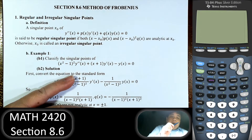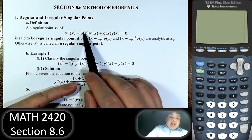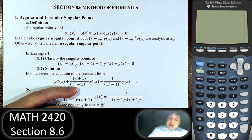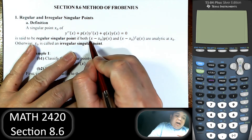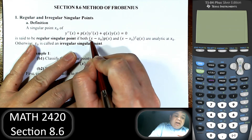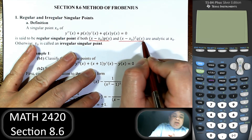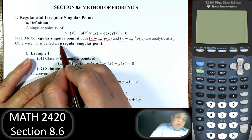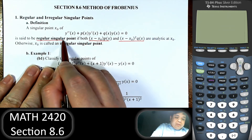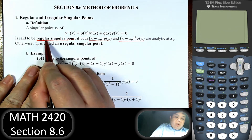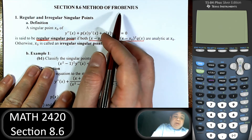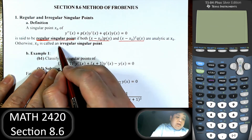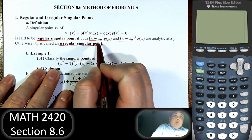In this section, we handle the special case when p of x and q of x is undefined — meaning they are not analytic. But if we have the case where we multiply (x minus x-naught) times p of x, and (x minus x-naught) squared times q of x, and if those are analytic at x-naught, then we call those points regular singular points. And if it is a regular singular point, we can use the method of Frobenius to write the power series solution. Otherwise it is called an irregular singular point, and we cannot do anything.